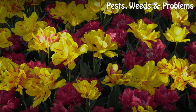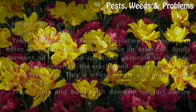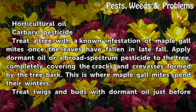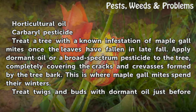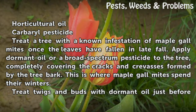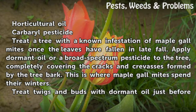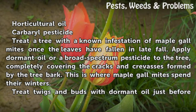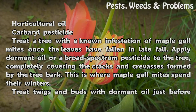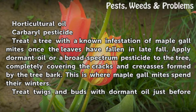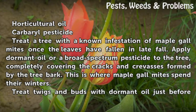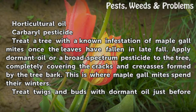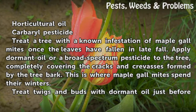Things you'll need: horticultural oil and carbaryl pesticide. Treat a tree with a known infestation of Maple Gall Mites once the leaves have fallen in late fall. Apply dormant oil or a broad-spectrum pesticide to the tree, completely covering the cracks and crevasses formed by the tree bark. This is where Maple Gall Mites spend their winters.